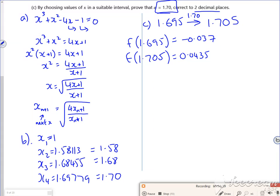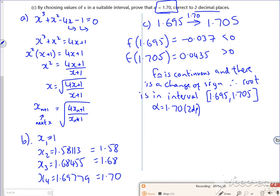So I've got 4 minutes 40. Let me pause that and write the conclusion. So I've just wrote that down, f the function is continuous and there's a change of sign, so the root is in the interval [1.695, 1.705], α = 1.70 (2dp). I'm going to run out of time, just copy that down. See you later, bye bye.